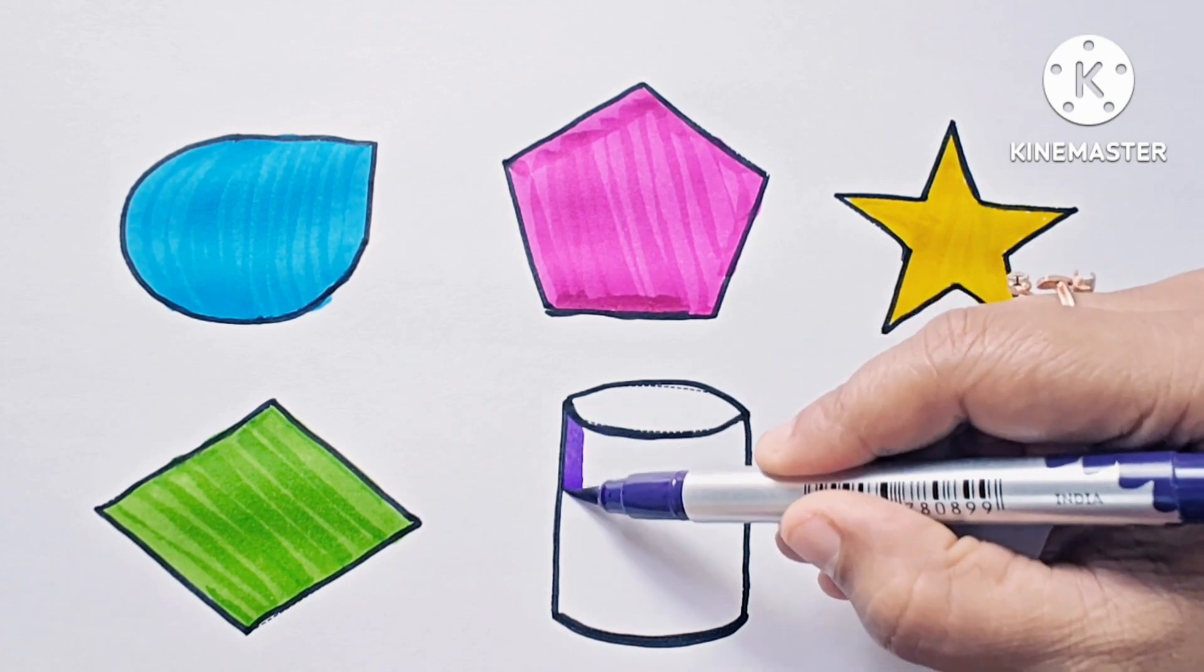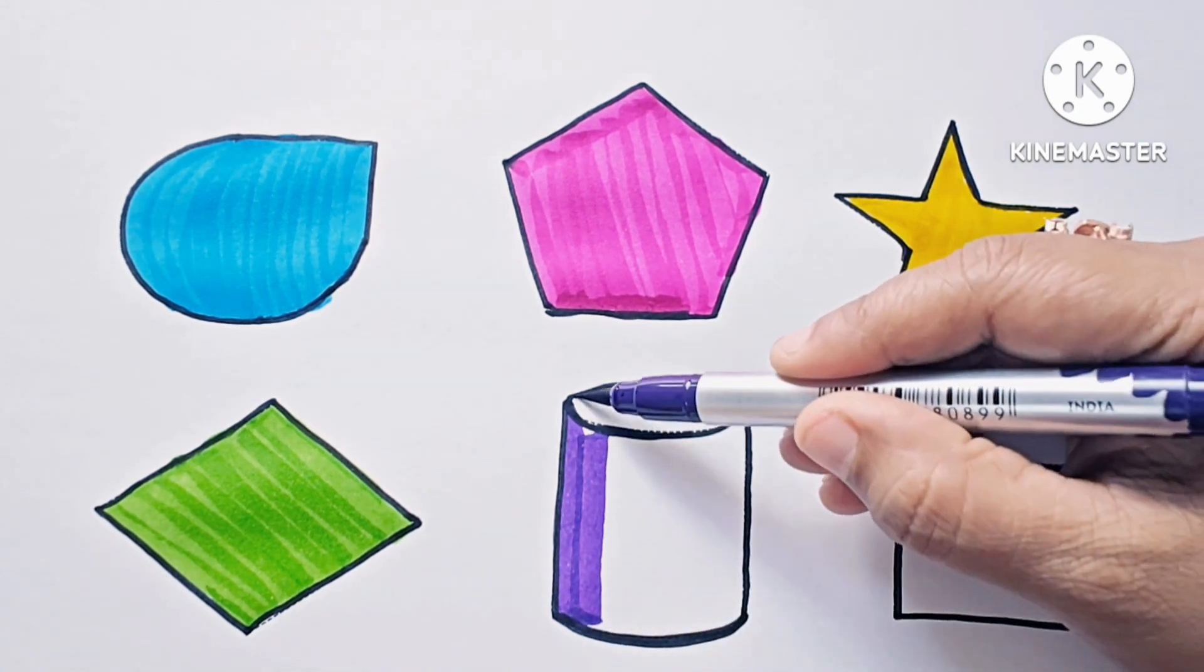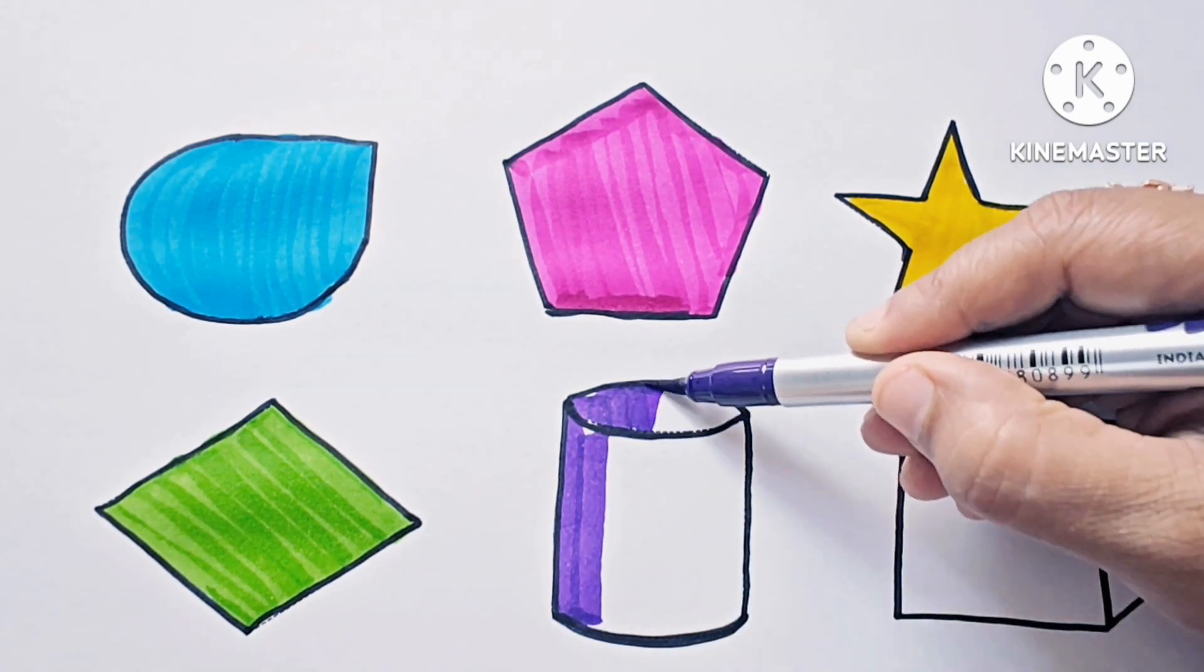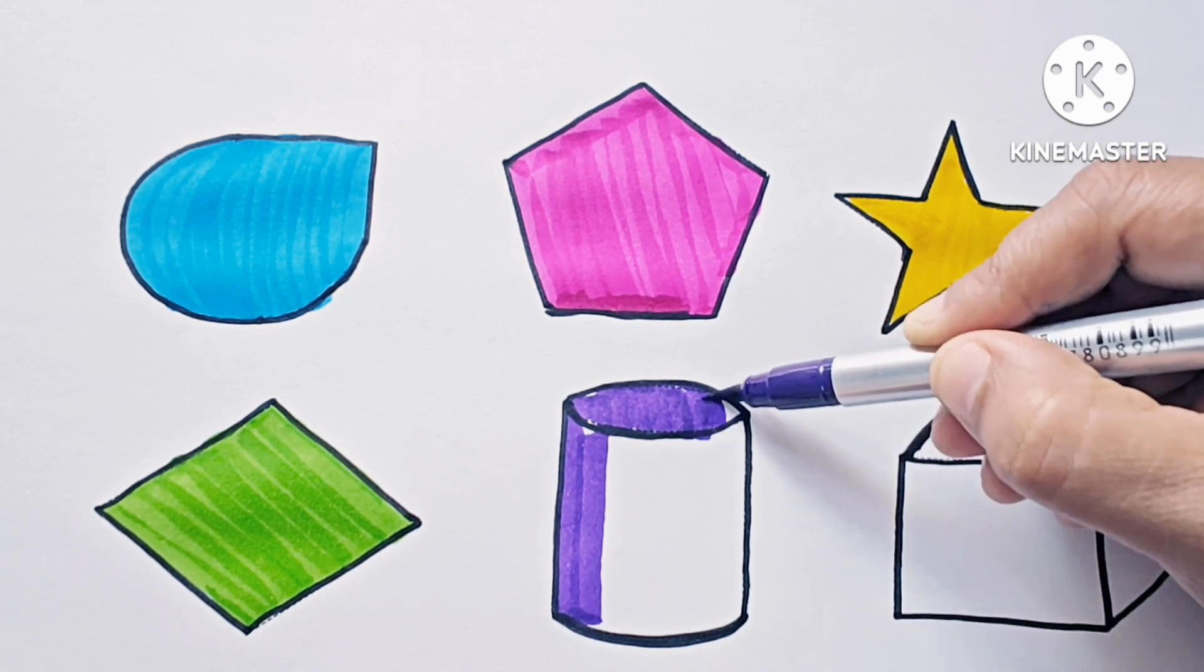Cylinder is a 3D shape. This is a 3D shape. This is cylinder and the color is purple color.